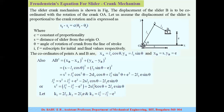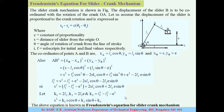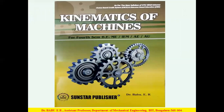Now let us define constants: k1 = 2·L2, k2 = 2·L2·E, and k3 = L3² - L2² - E². Substituting these, we get the Freudenstein equation for the slider-crank mechanism: S² = k1·S·cos(theta) + k2·sin(theta) + k3. For more information, refer to the textbook.